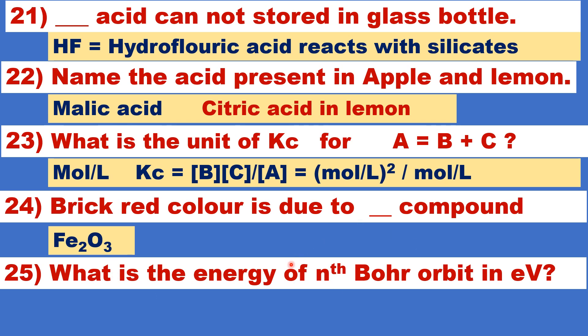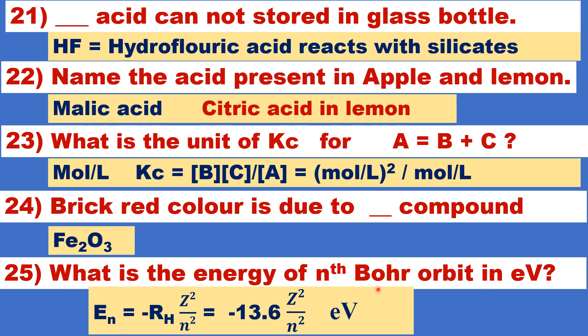What is the energy of the nth Bohr orbit expressed in electron volt? En, the energy of the nth orbit equal to minus Rydberg constant z square by n square equal to minus 13.6 z square by n square in electron volt.